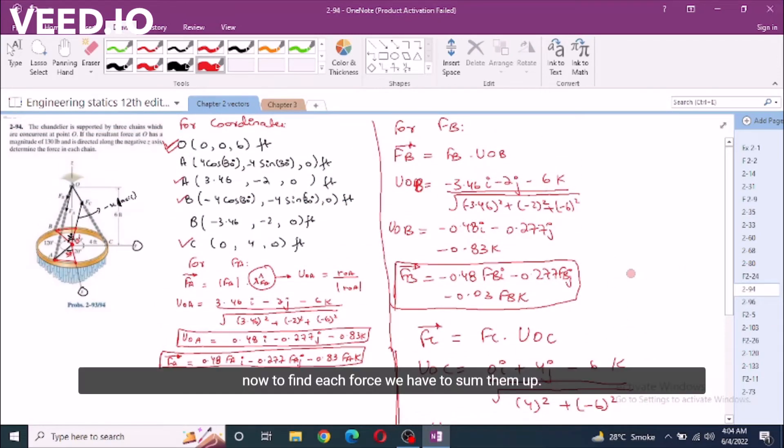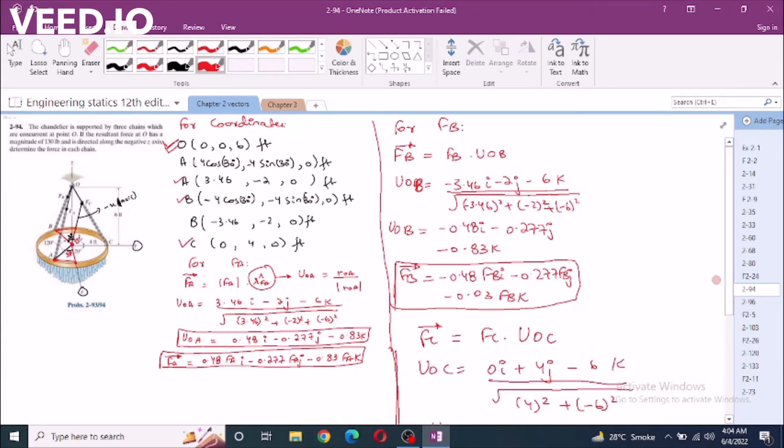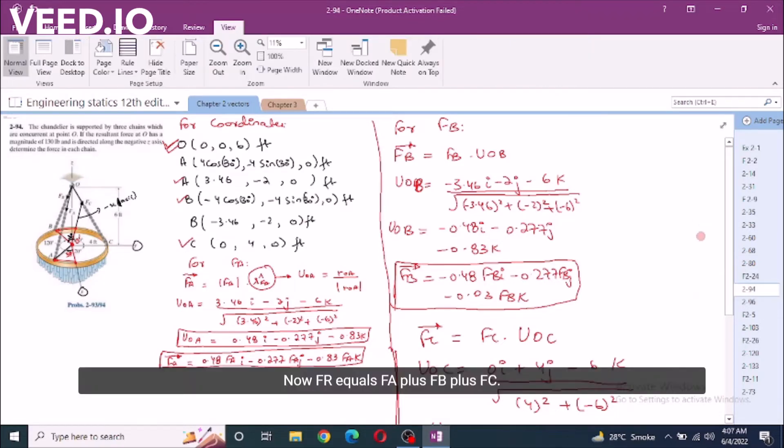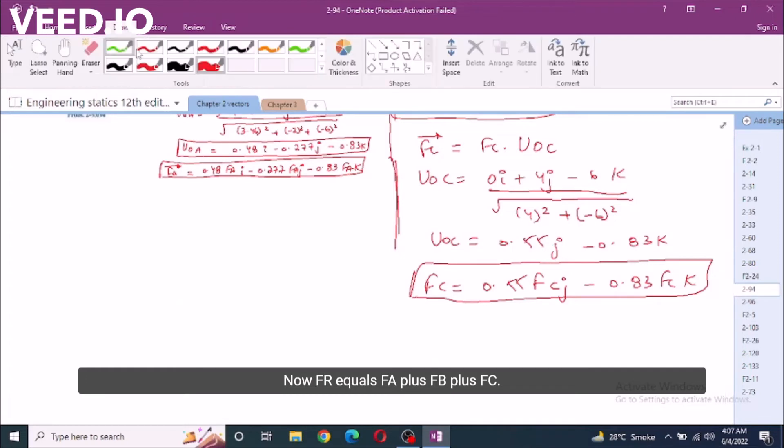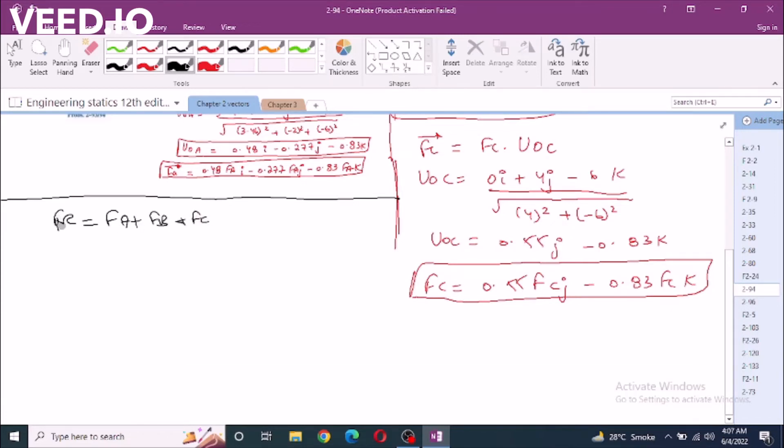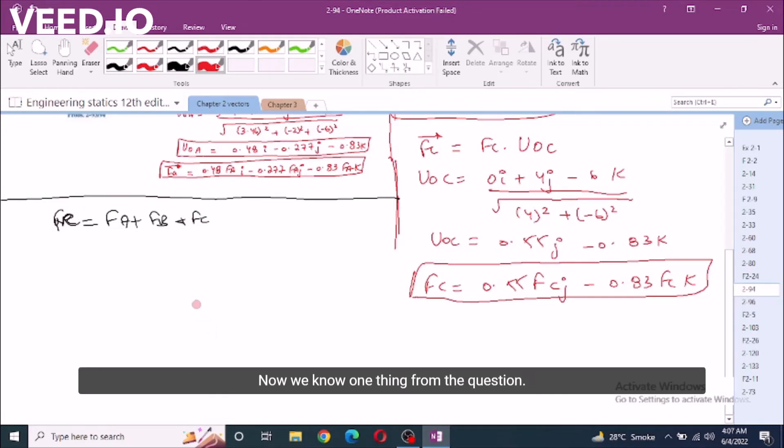Now to find each force we have to sum them up. Now FR equals FA plus FB plus FC. Now we know one thing from the question: the resultant exists only in the z axis, so we can write here that since FR only exists in z axis, the x component of resultant force and y component of resultant force equal 0.